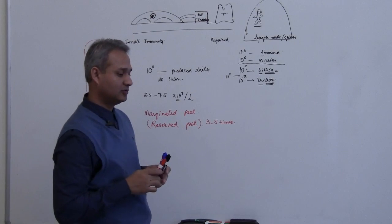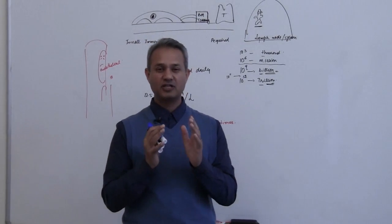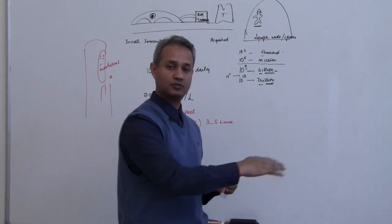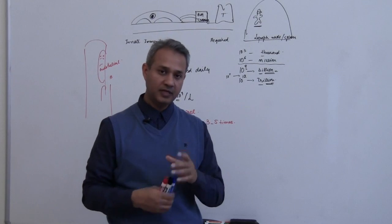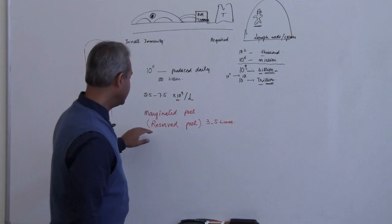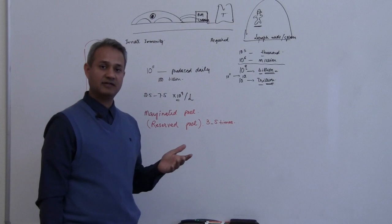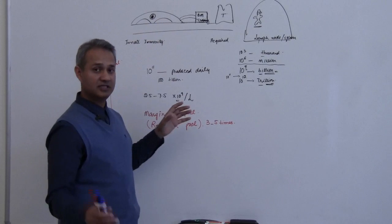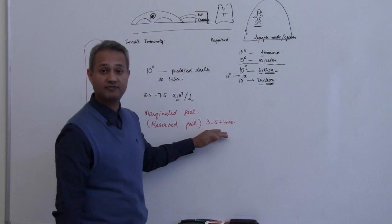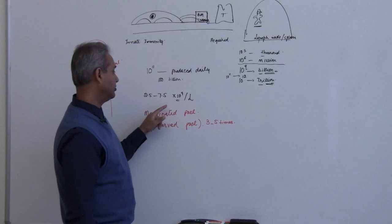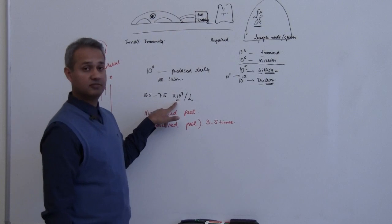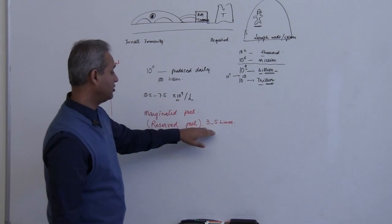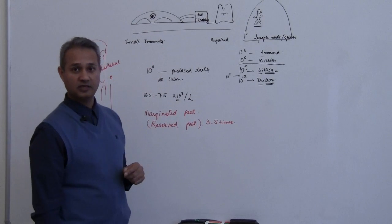One interesting thing for today's lecture: you can equate the neutrophil to a plane, a jet plane which helps with defense. This reserve pool could be the jet planes sitting in the hangers—the bone marrow being the hangers, these little jet planes are there. How much more? 3 to 5 times. So you can do your math: we have 2.5 to 7.5 times 10 to the power 9 billions per liter, and 3 to 5 times more in the bone marrow.